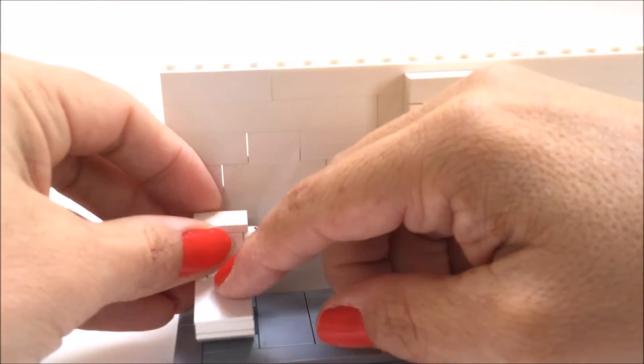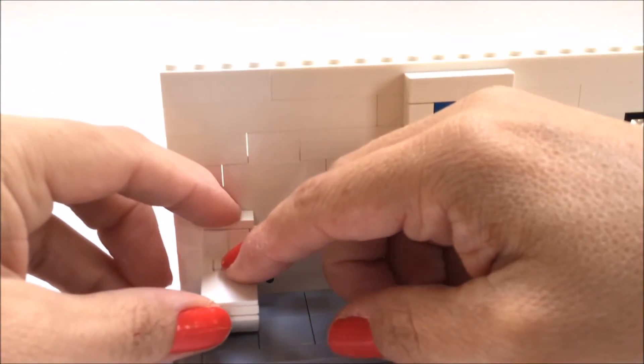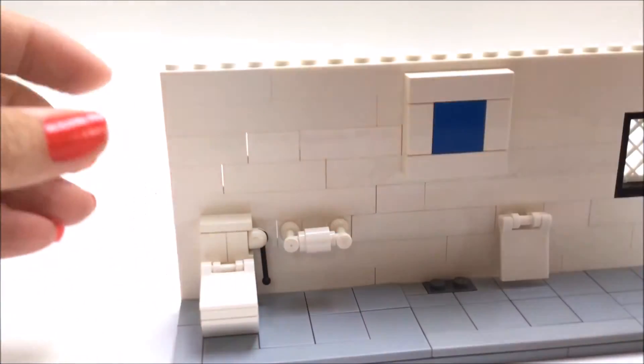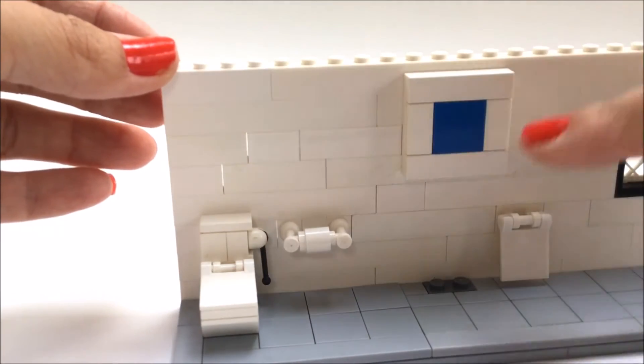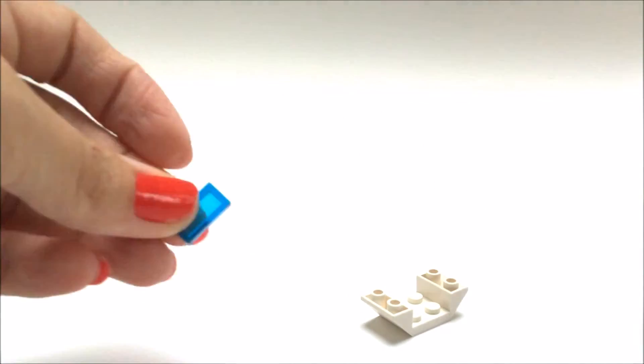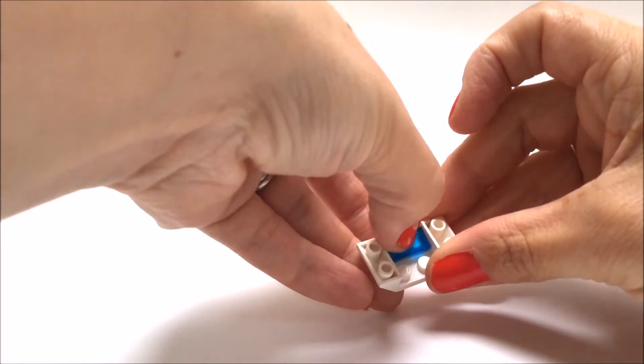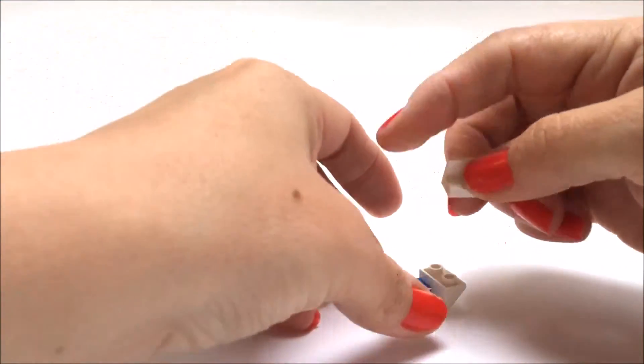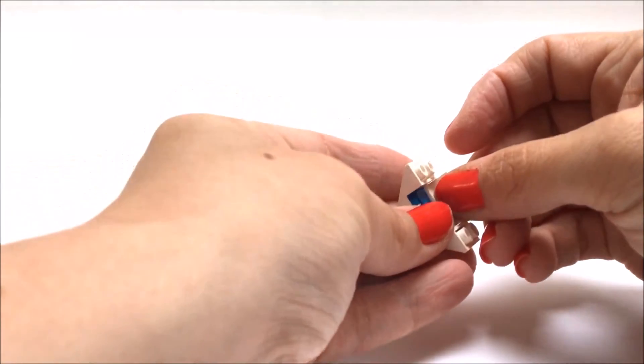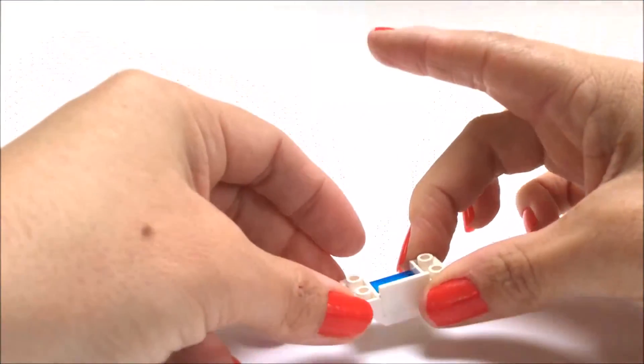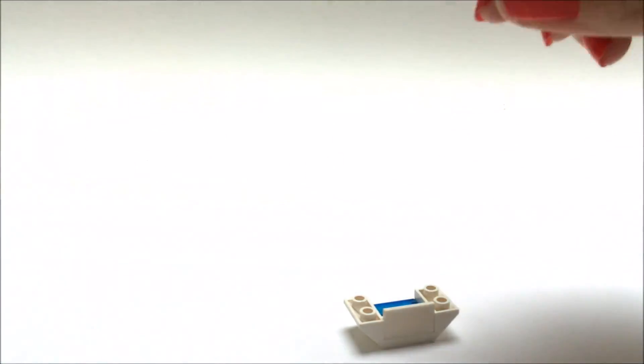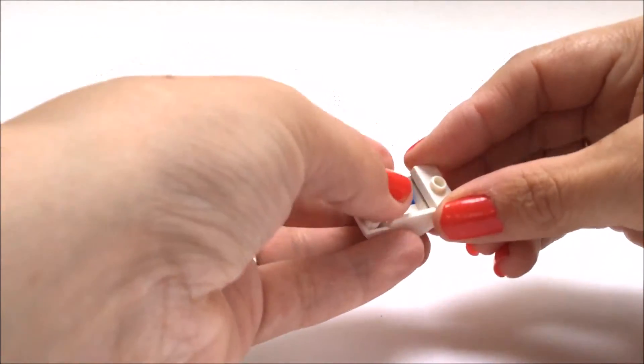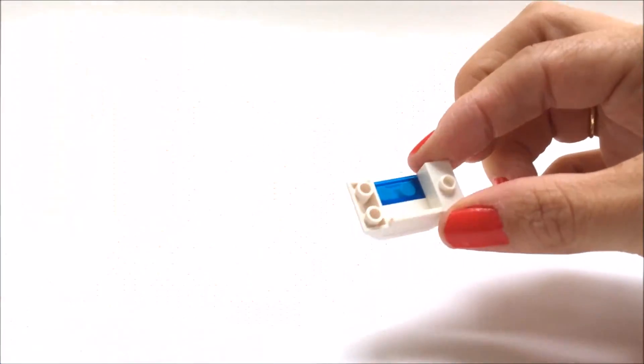Now onto the sink, for our sink again we're going to take one of these bricks, this time we're going to add a transparent blue tile and another tile with a side brick to create the sink. Onto the sides we're going to add these tiles with these knobs for our taps to sit on.